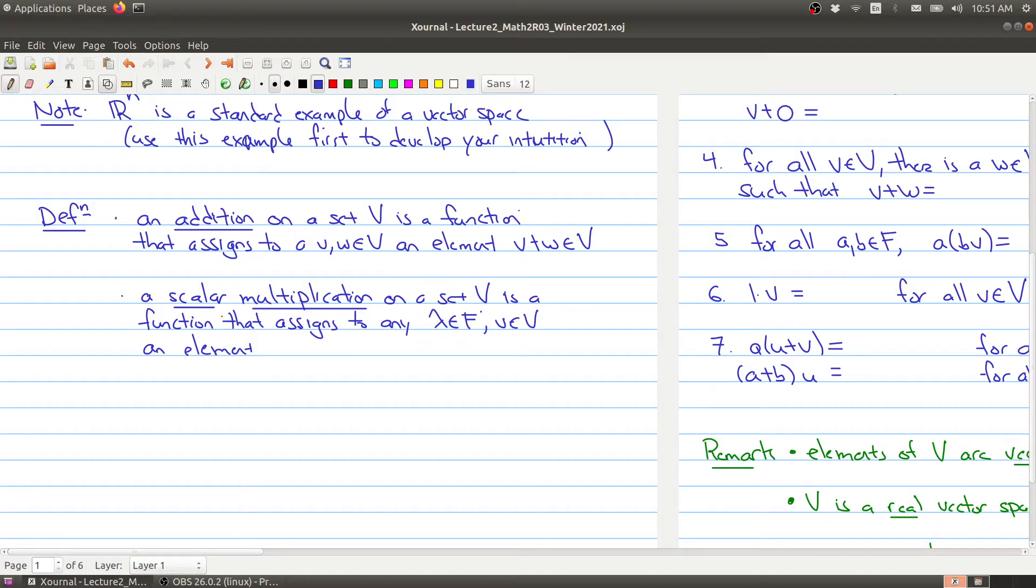And a scalar multiplication on a set V is a function that assigns to any λ in F (so λ is either a real number or a complex number) and any vector V inside of V a new element, which we say is the scalar multiple of V. So λ times V gives you a new element in our set V.